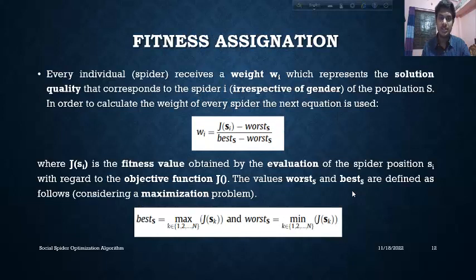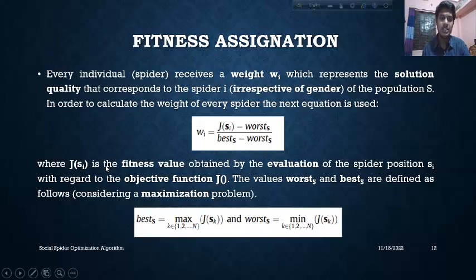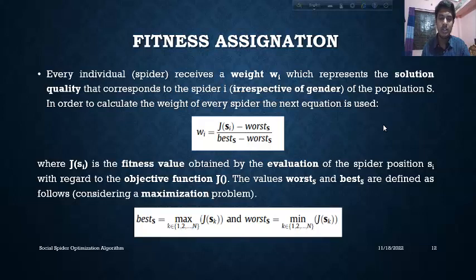Now let's discuss fitness assignation, where we are considering the maximization problem. The fitness weight value is computed as (J(Si) minus min) divided by (max minus min), following that equation. The objective function J, where J(Si) is the fitness value obtained by the evaluation of the spider at position Si. The BEST value uses the MAX function over 1 to N, and the WORST (ORS) uses the minimum over 1 to N of the objective function.